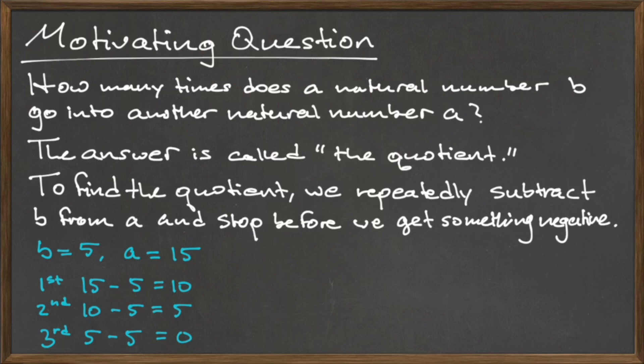Remember that 0 is neither positive or negative, so this subtraction is valid. We have to stop here, since if we tried to subtract 5 from 0, we would get a negative answer. So, to find the quotient, we count the number of subtractions we used to get to this point, which is 3. So, the quotient is 3.